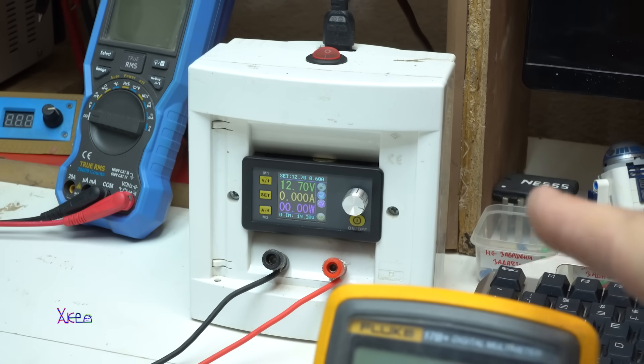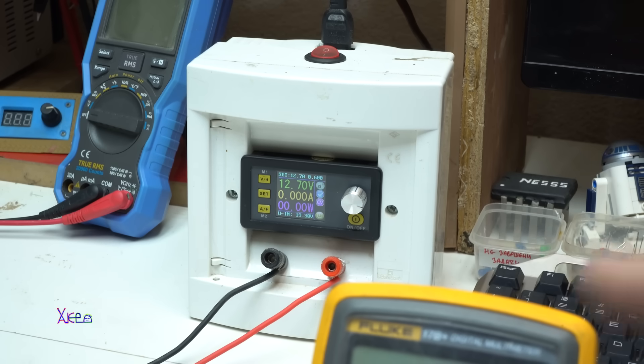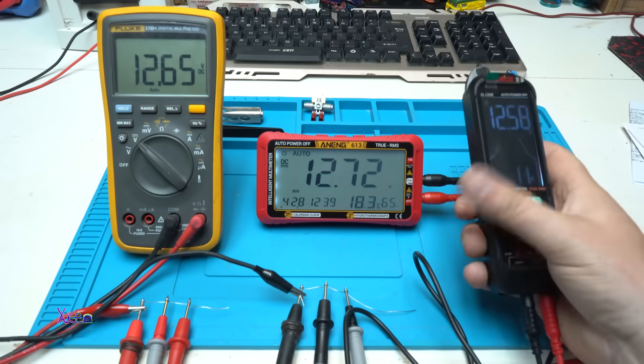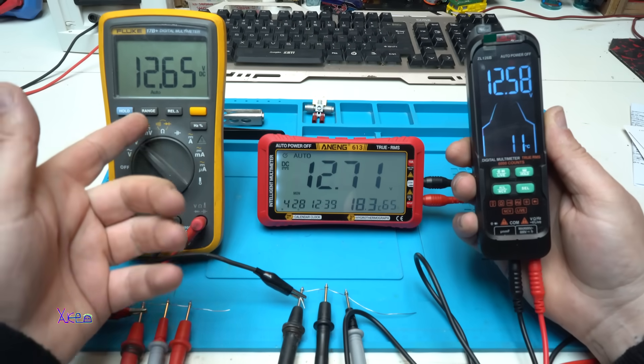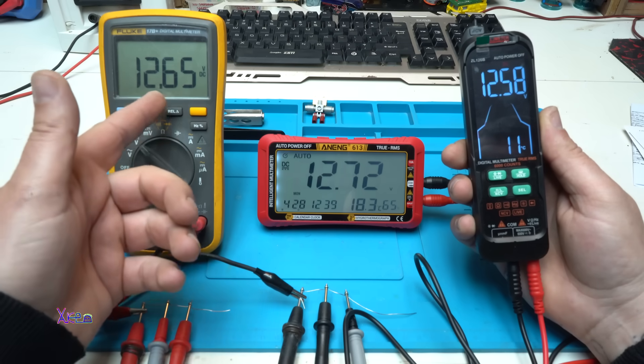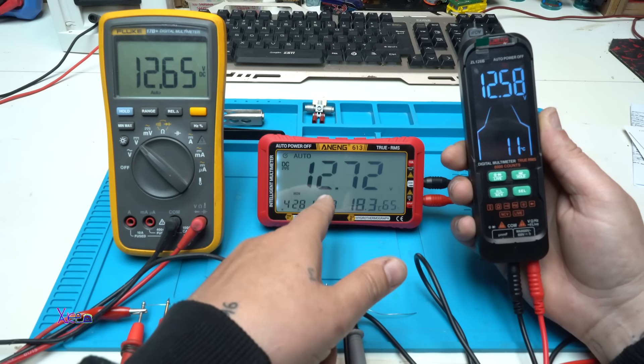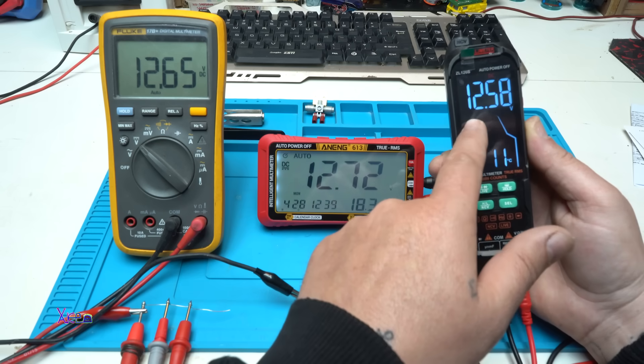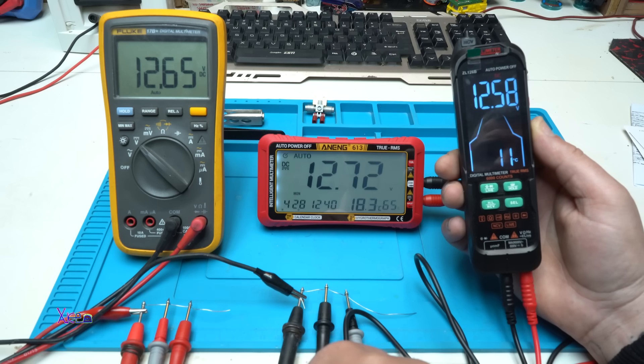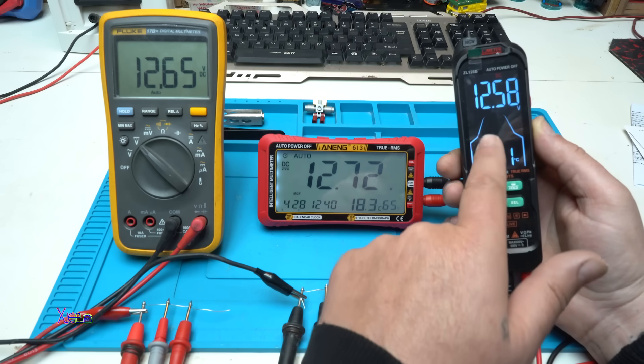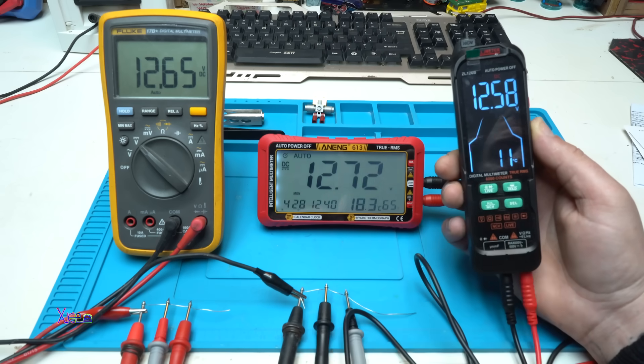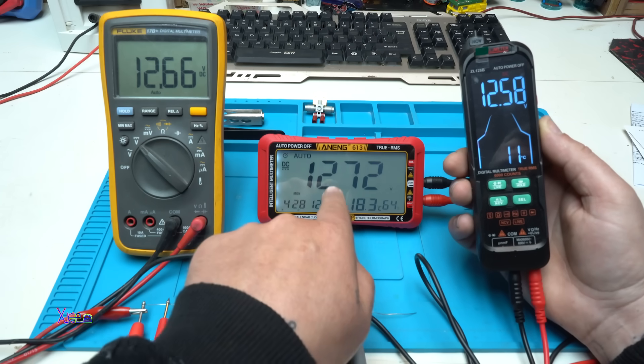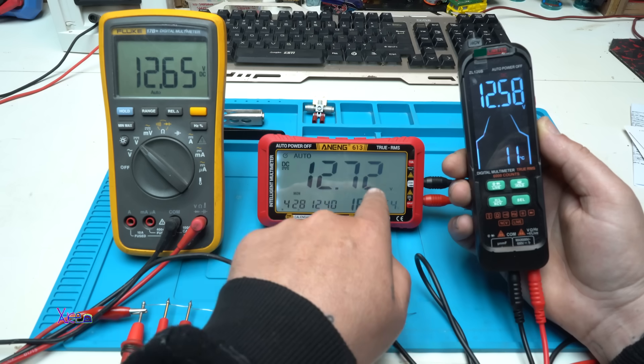Let's measure something. From my power supply I'm sending 12.7 volts to all three multimeters. And on the Fluke it shows 12.65. On the Anang 613 model, 12.72. And on this rechargeable multimeter ZL126 model, 12.58 volts DC voltage. The most accurate and most close to the power supply is this one, 12.72 volts.